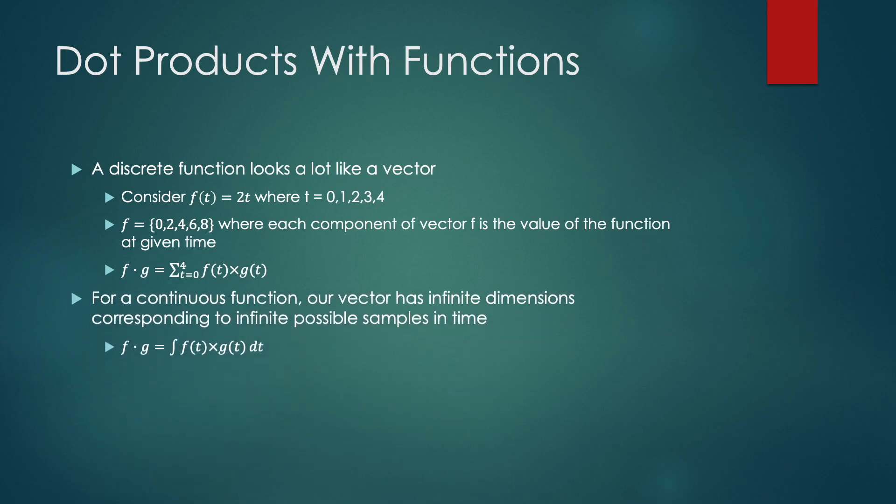Now we can extend this idea to continuous functions. You can now think of a continuous function as having infinite sampling intervals, in which case f of t and g of t, or vector f and vector g, grow infinitely in length. They have an infinite amount of components. And in this case, the inner product of f with g, the sum now becomes an integral. And so the inner product between two continuous functions is the integral of the functions multiplied with each other.